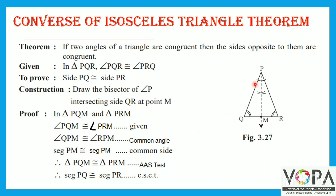And segment PM is congruent to segment PM, which is a common side. Therefore, triangle PQM is congruent to triangle PRM by AAS test.